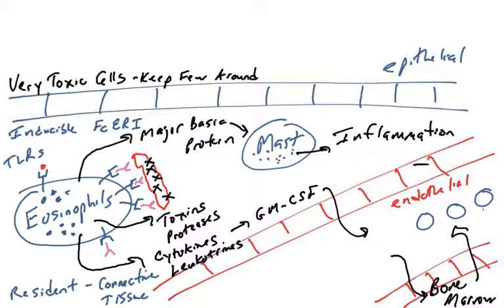So eosinophils actually will talk to mast cells at this point as well. Eosinophils can induce a lot of damage and a lot of inflammation to the body. But again, helpful in removing large multicellular organisms.